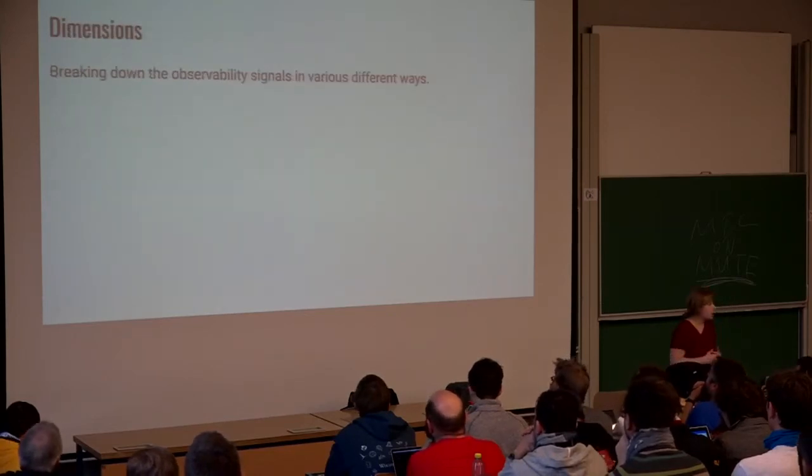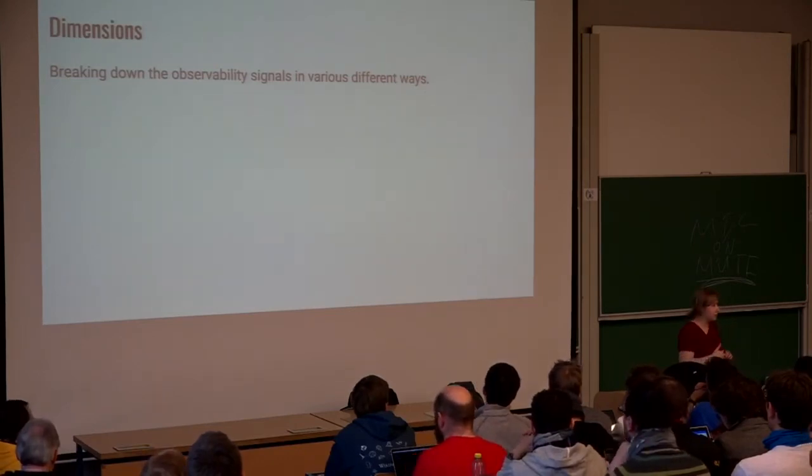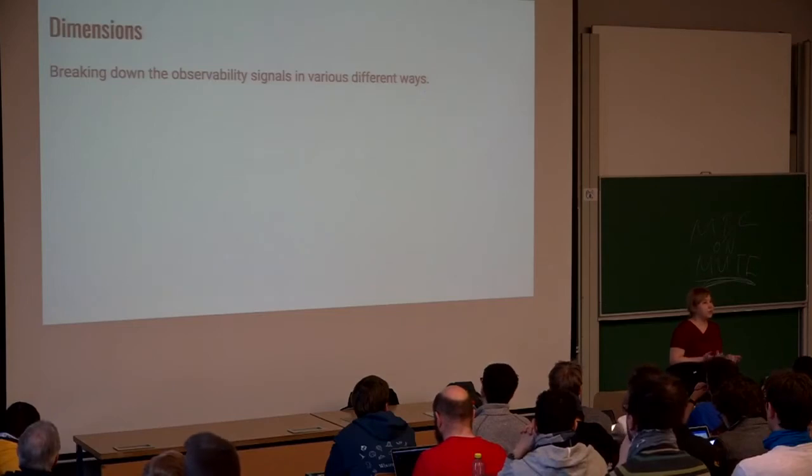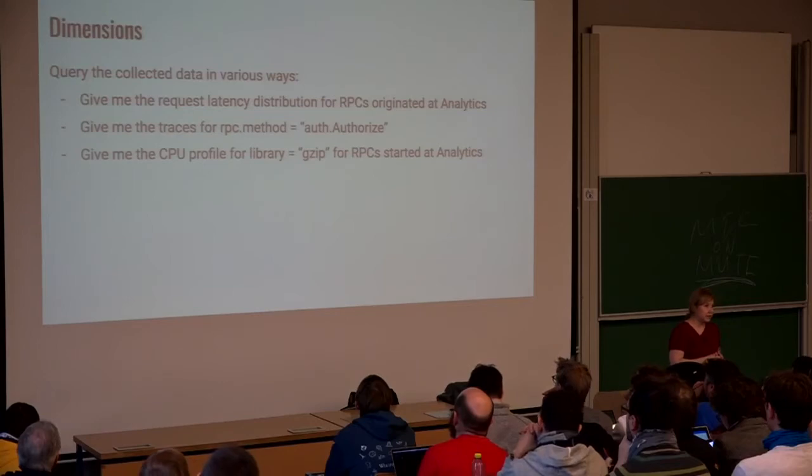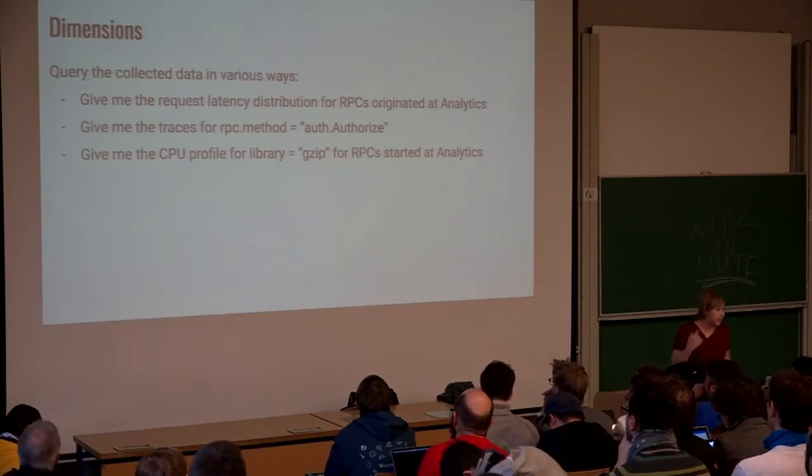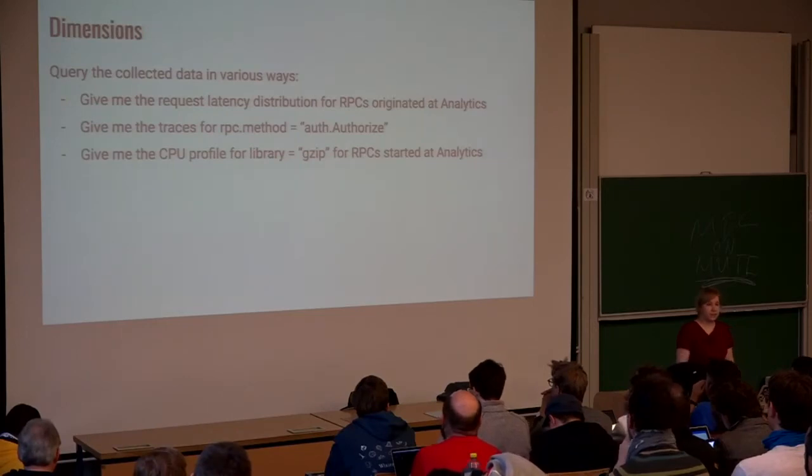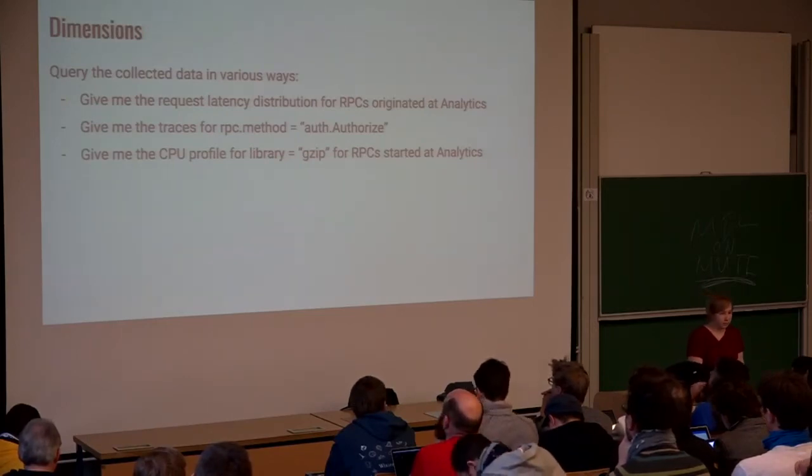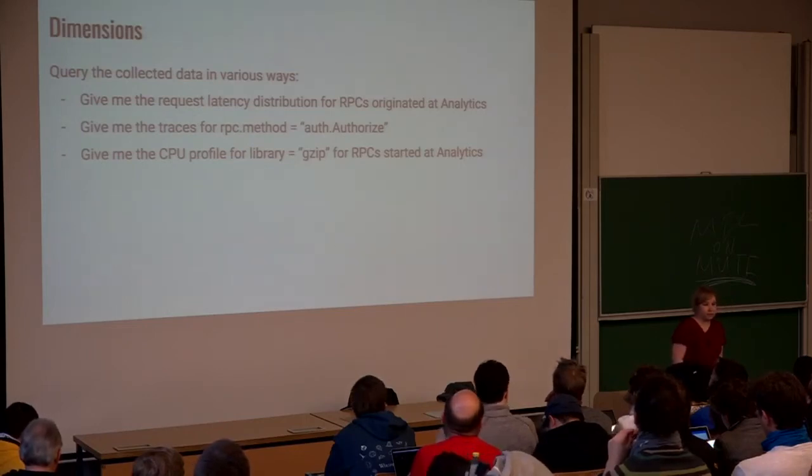So this is why we want to be able to break down our signals in various different ways. We call these different ways dimensions. With dimensions, you can query the collected data in ways that will help you to answer some of the earlier questions I had. Give me the blob storage request latency distribution for RPCs originated at Google Analytics front-end server, for example. Or give me the traces and reports containing the specific RPC method. Or give me the CPU profile for this library for the RPCs just generated at Google Analytics.